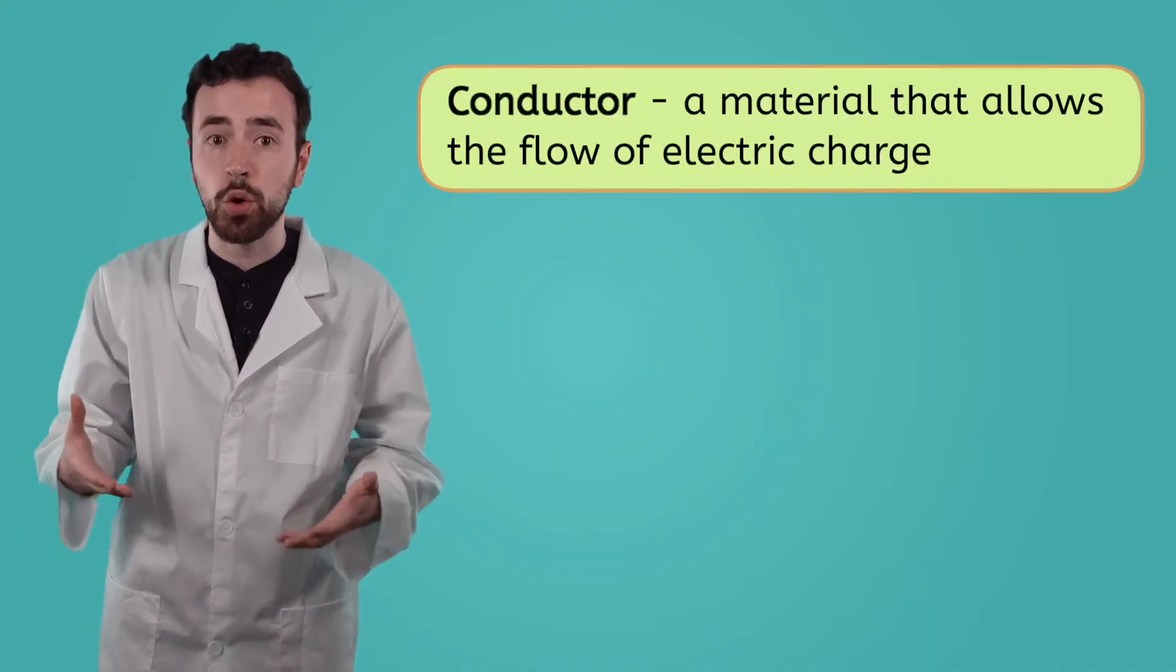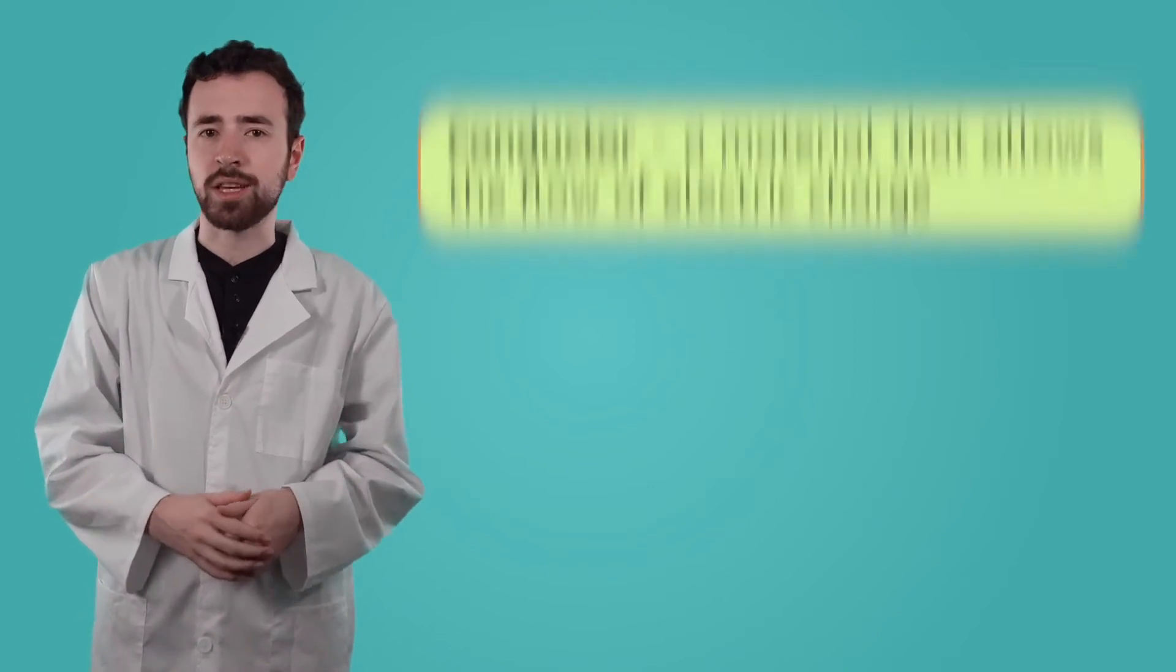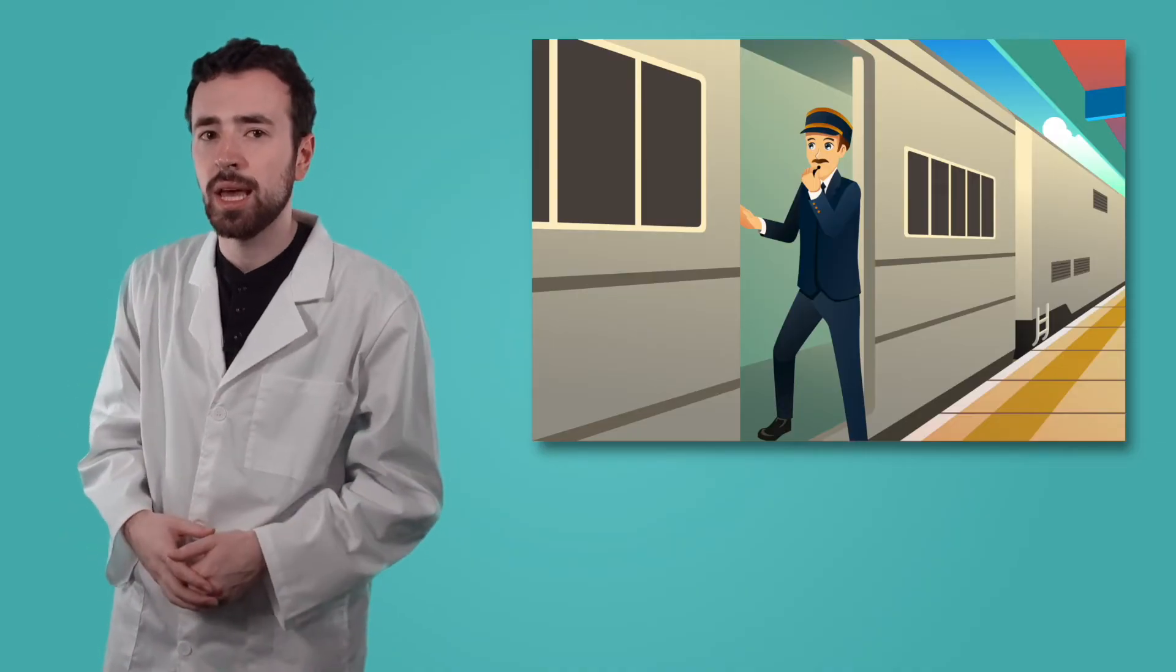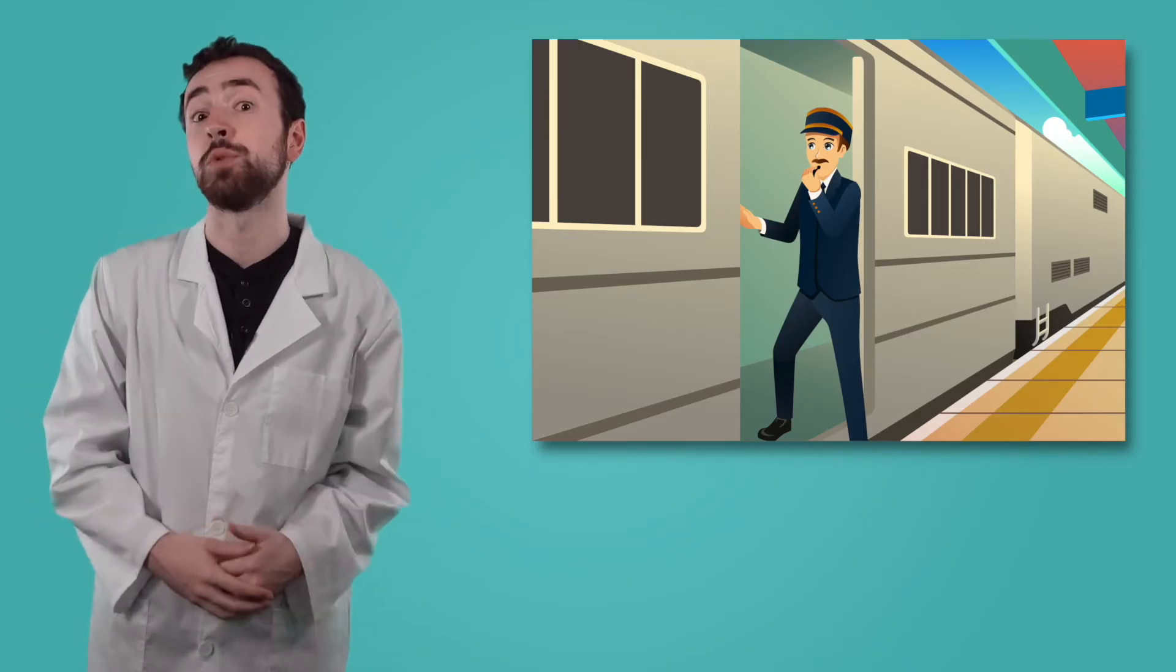This moving charge, what we call electric charge, flows through matter, but it doesn't travel through all materials in the same way. Materials that allow electric charge to flow easily are called conductors. Just as the conductor of an orchestra guides the musicians through a symphony, or a train conductor keeps the trains flowing to their destinations, conductive materials guide the flow of the electric charge and keep things moving.